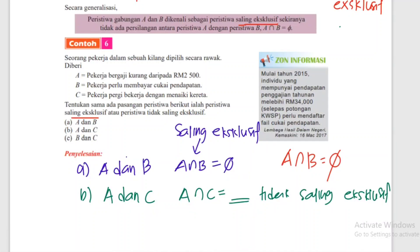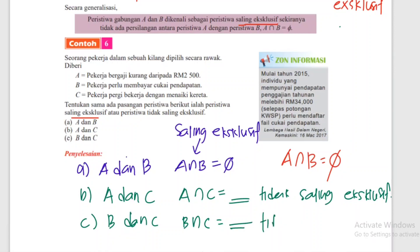Sektor B dan C: pekerja perlu membayar cukai pendapatan dan pergi bekerja menaiki kereta - boleh berlaku bersama. Ada kaitan: bayar cukai dengan pergi kerja. Jadi B dan C ada nilai, tidak saling eksklusif.